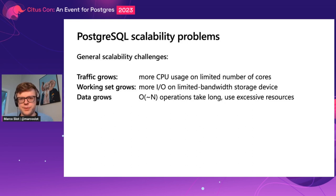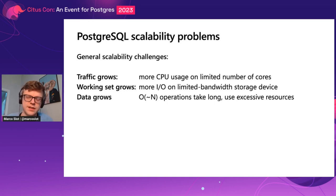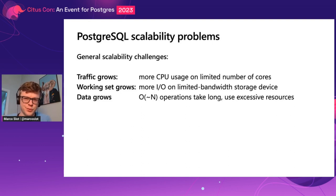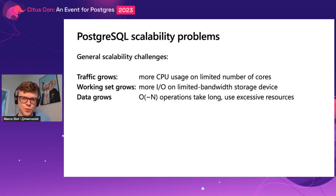What that looks like is, if your traffic grows, you get more and more CPU usage and use more of your storage bandwidth. If a greater section of your data is frequently read — your working set — more data has to be read directly from disk rather than from cache, and you use more of that limited storage bandwidth. And as your data grows from, let's say, a gigabyte to 10 terabytes, batch operations or analytical queries start taking so much more resources that they start dominating your whole workload. So that's also a very common scalability problem you have to factor in.